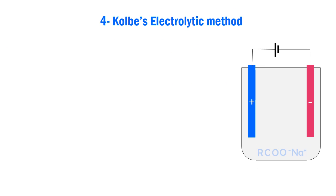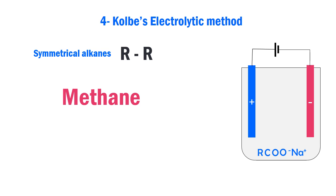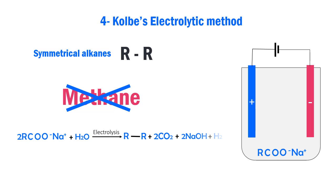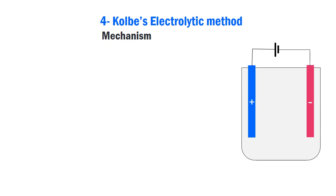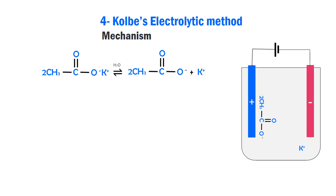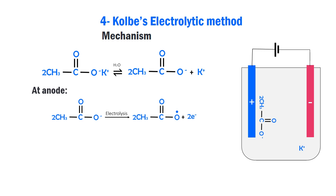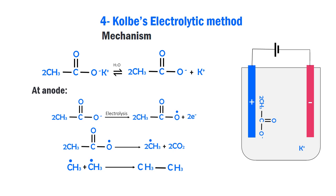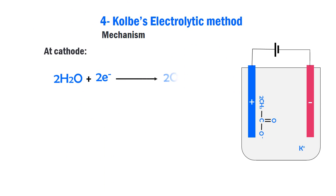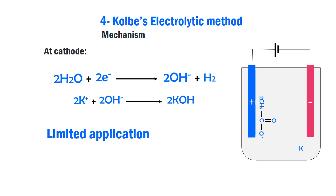When a concentrated solution of the sodium or potassium salt of a monocarboxylic acid is electrolyzed, an alkane is produced. This method, known as Kolbe's electrolytic method, is only suitable for the preparation of symmetrical alkanes of the type R-R; methane cannot be prepared by this method. In the mechanism, when potassium acetate is electrolyzed, acetate ions migrate toward the anode, give up one electron to produce acetate free radicals, which decompose to give methyl radicals and carbon dioxide. Two methyl radicals combine to give ethane. This reaction has limited synthetic applications as it forms a number of side products.